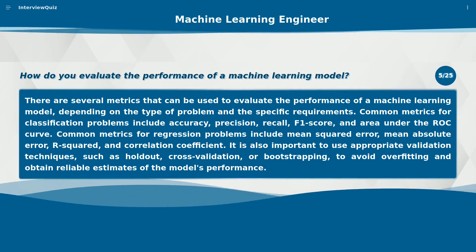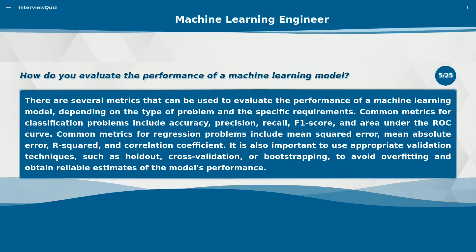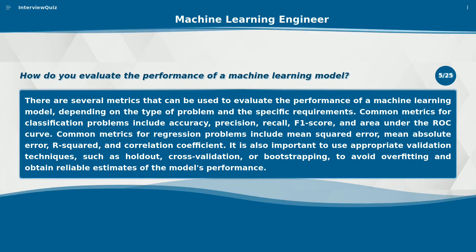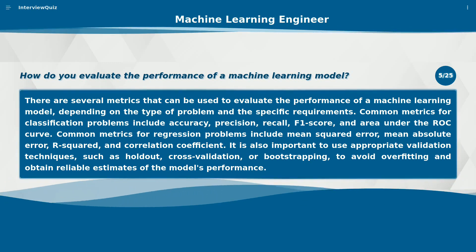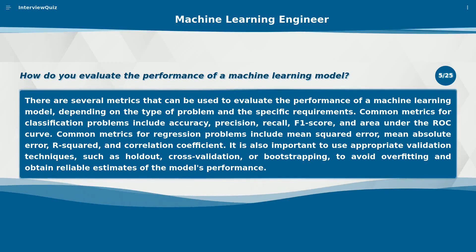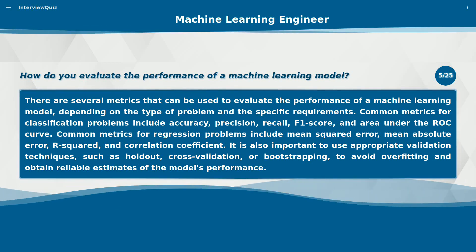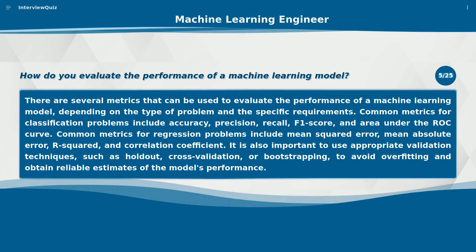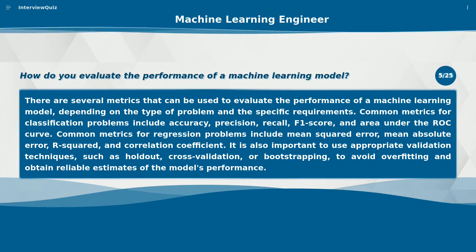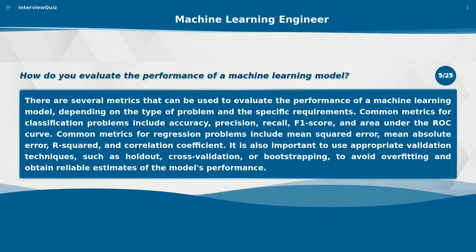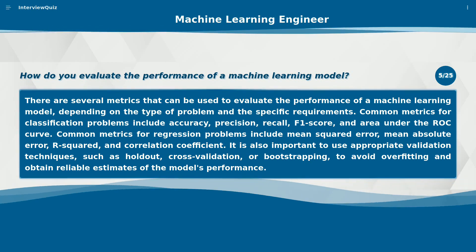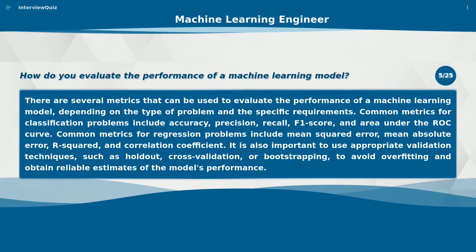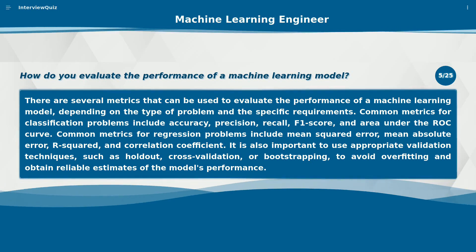Common metrics for regression problems include mean squared error, mean absolute error, R-squared, and correlation coefficient. It is also important to use appropriate validation techniques such as holdout, cross-validation, or bootstrapping to avoid overfitting and obtain reliable estimates of the model's performance.